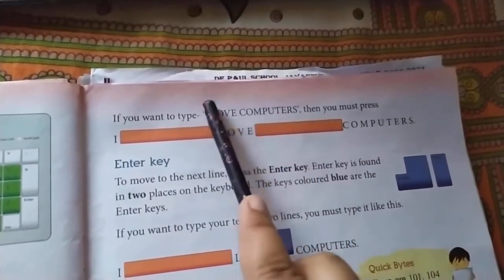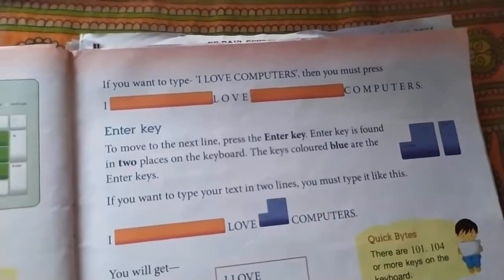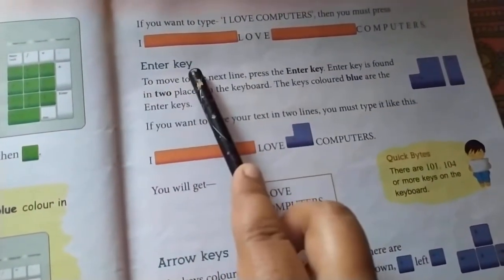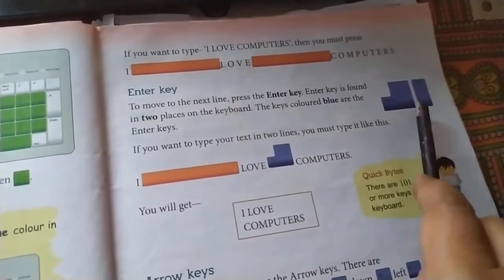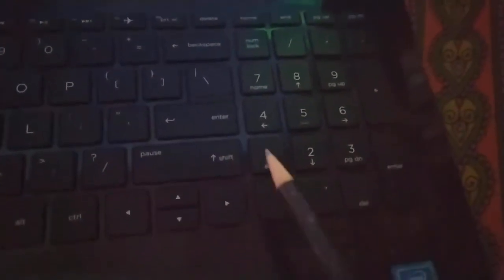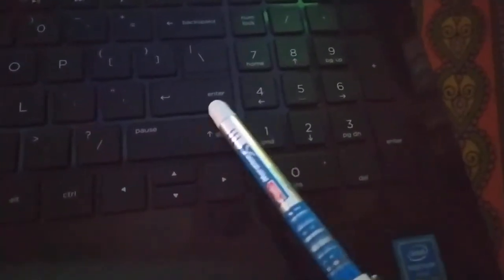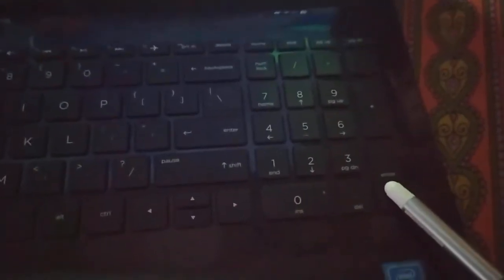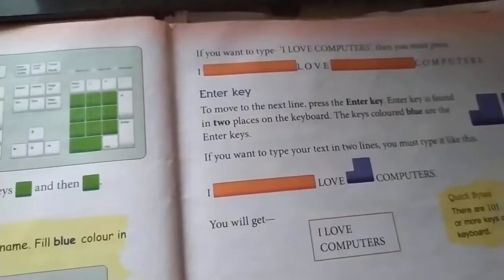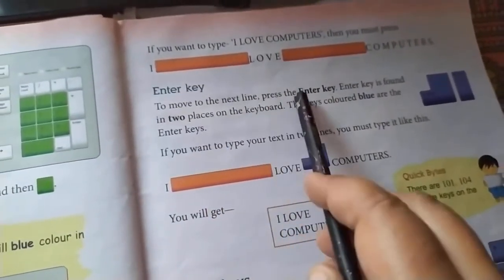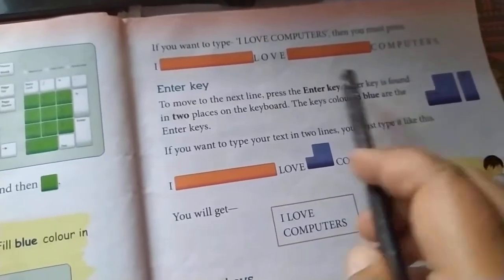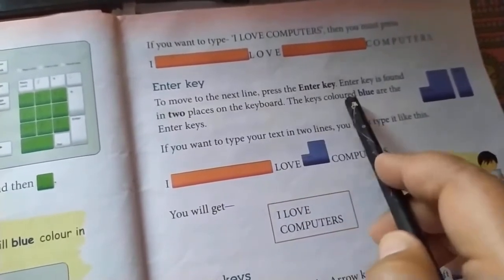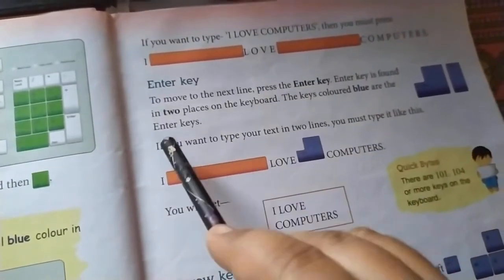Next, the enter key. There are two enter keys on the keyboard — this is one enter key and this one is another enter key. To move to the next line, press the enter key. The enter key is found in two places on the keyboard, and the keys colored blue are the enter keys.